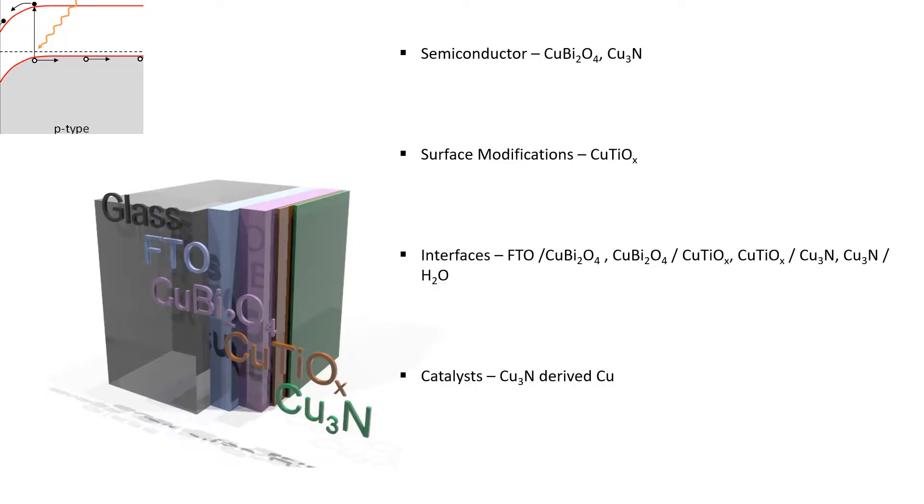As mentioned, solar fuels generators contain a few key components: semiconductors, surface modifications such as carrier selective contacts or passivation coatings, interfaces which are critical to understand as there are many and typically dictate how efficiently materials will perform, and catalysts. The materials for these applications and discussed in today's talk include copper bismuth oxide and copper nitride semiconductors, copper titanium oxide surface modification on copper bismuth oxide, interfaces at the copper bismuth oxide electrolyte junction, and finally copper nitride derived copper for CO2 reduction. For semiconductors, the materials should be stable under photocatalytic conditions, having band gaps suitable for solar energy harvesting and band positions well matched to the redox potential of target chemical reaction.